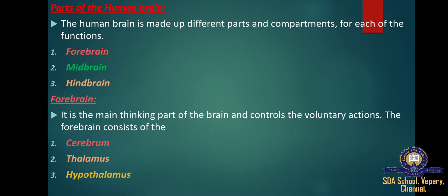The human brain is made up of different parts and compartments, each with specific functions. The three major parts are: first, the forebrain; second, the midbrain; and third, the hindbrain.